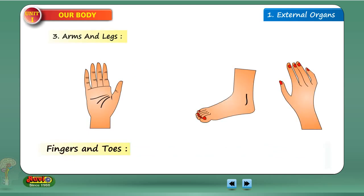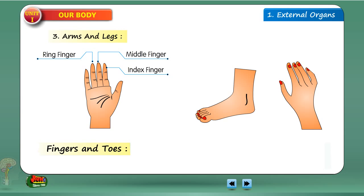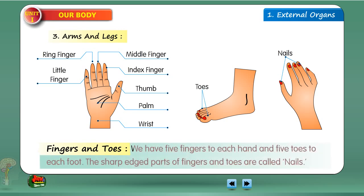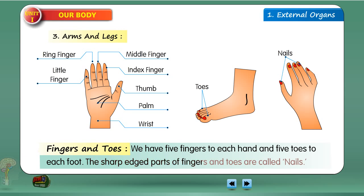The fingers include the middle finger, ring finger, index finger, little finger, and thumb, along with the palm and wrist. We have 5 fingers on each hand and 5 toes on each foot. The sharp edged parts of fingers and toes are called nails.